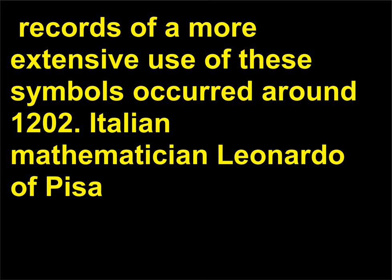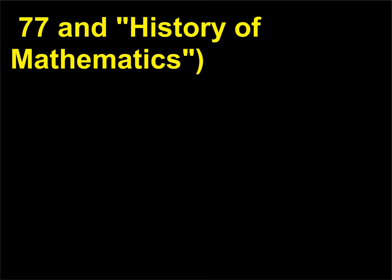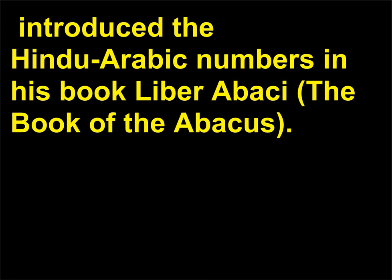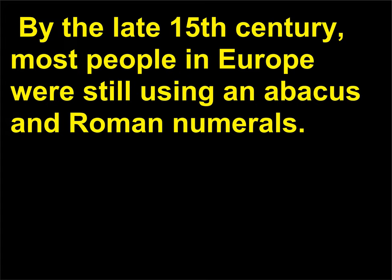Records of a more extensive use of these symbols occurred around 1202. Italian mathematician Leonardo of Pisa, also known as Fibonacci, introduced the Hindu-Arabic numbers in his book Liber Abaci, the Book of the Abacus. The acceptance of such a numbering system was difficult. For example, in some places in Italy it was forbidden to use anything but Roman numerals. By the late 15th century, most people in Europe were still using an abacus and Roman numerals.